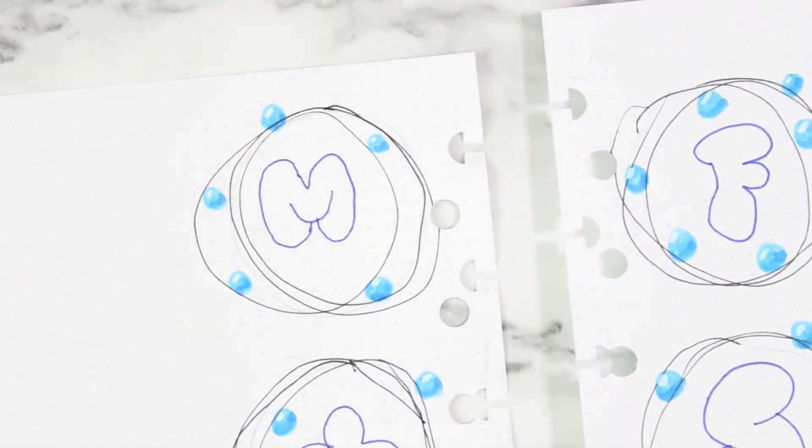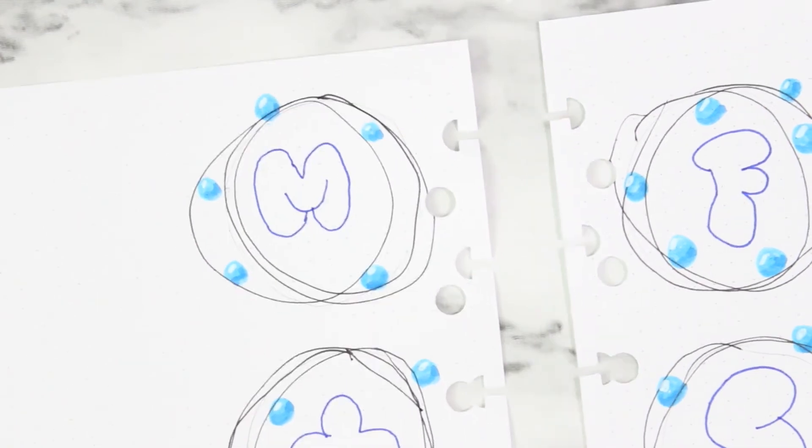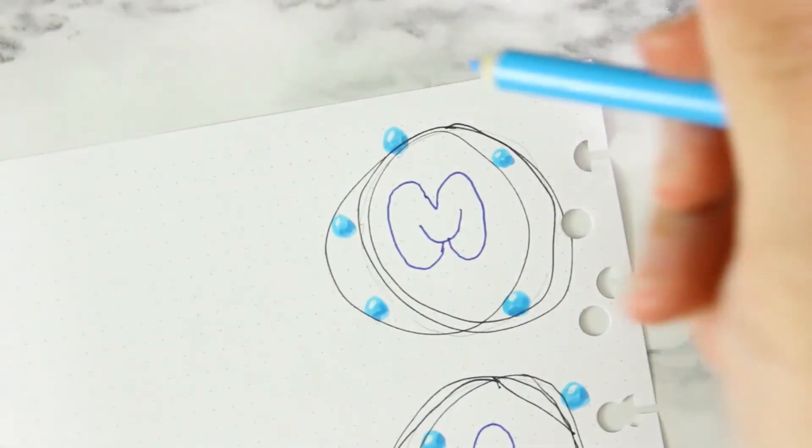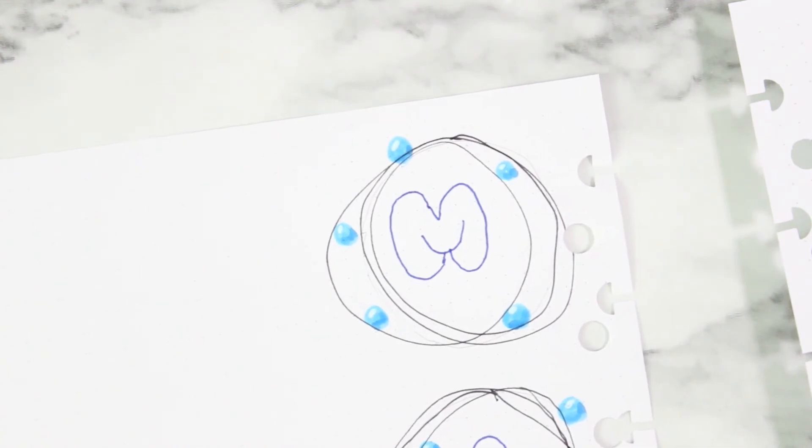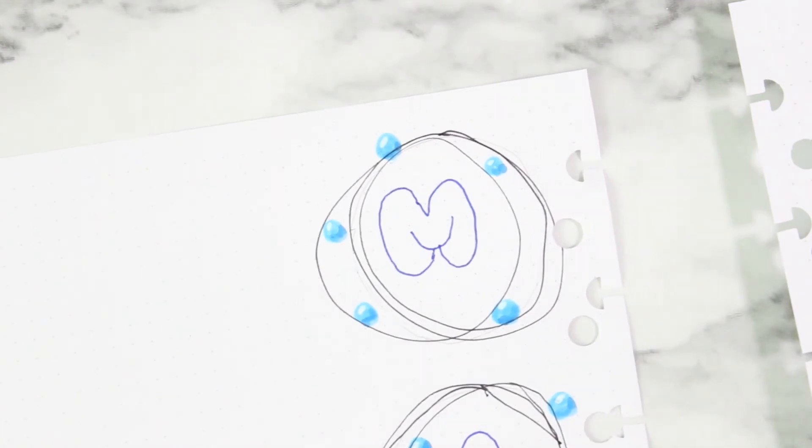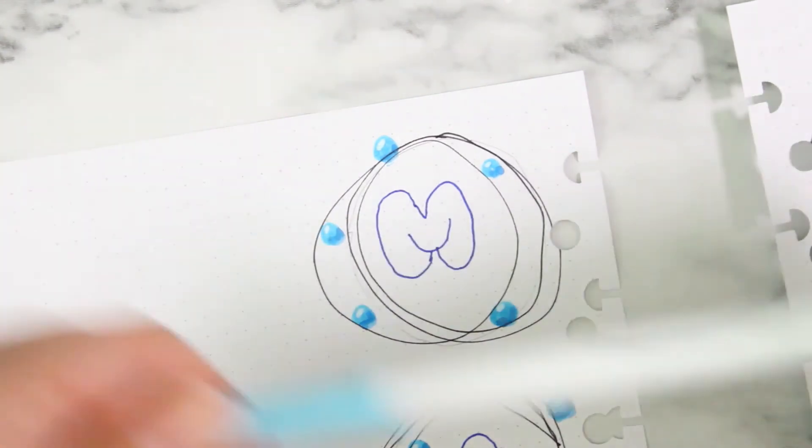I kind of wish I did that in a lighter blue color, so we're going to go ahead and color them in with colored pencil. I mean, I guess we can color them in with marker, actually. So we'll just do that. This is a Crayola Super Tip.